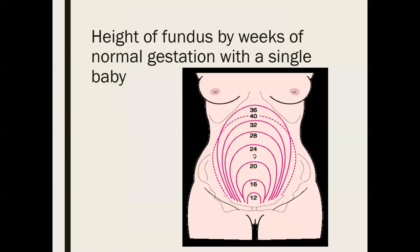Here is an example — a picture showing the height of the fundus by week. At 12 weeks you won't feel the fundus, but as you move through the pregnancy you'll see the fundus move higher and higher, until by the end of pregnancy it's right up under the rib cage. It's really very space-occupying.